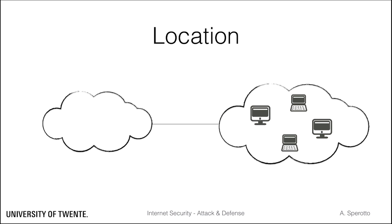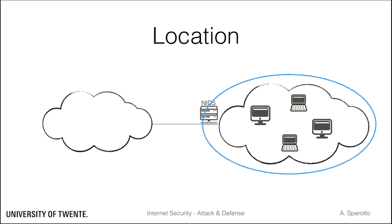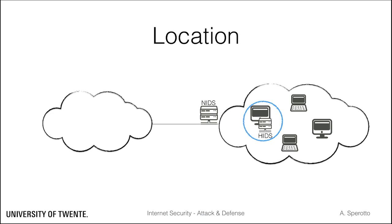A network-based IDS analyzes traffic pertaining to an entire network and is placed at a strategic vantage point, for example at the entrance of the network to protect. The advantage is that a single system protects an entire network, though the disadvantage is that it may not have access to more detailed information such as logs on a specific host. A host-based IDS runs on a specific host and may have access to local log files, system information, and can detect if system files are tampered with. The disadvantage is that host-based IDSs have only a local view of the attack, unless deployed in a distributed fashion, which increases management complexity.